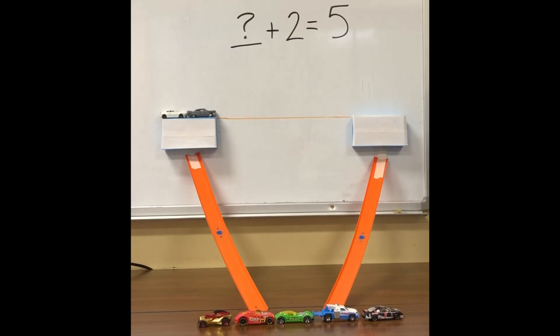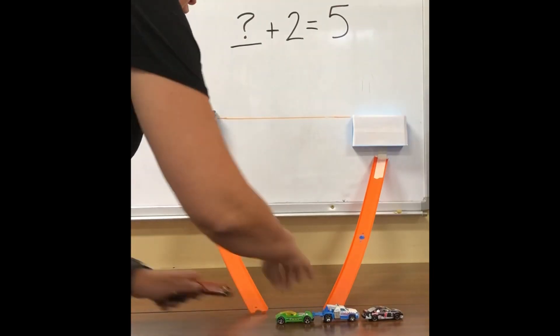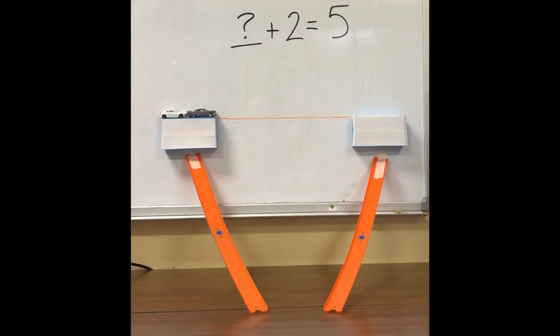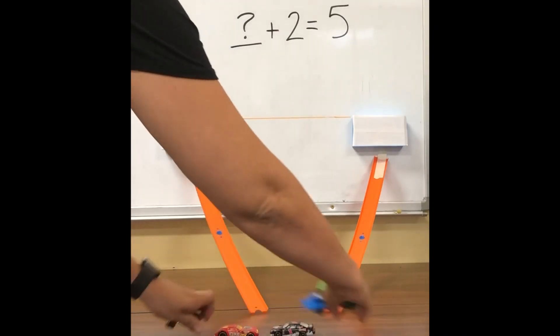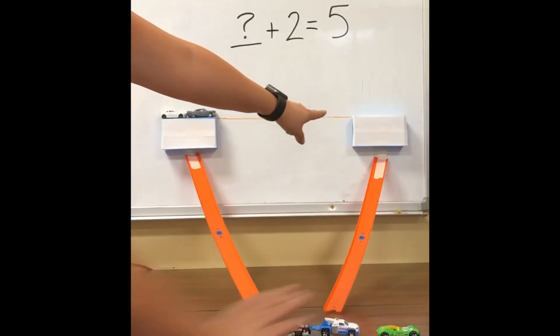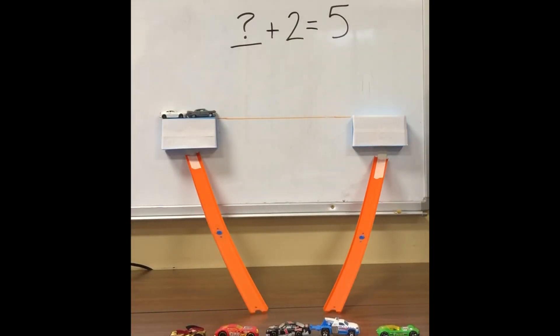How many cars would need to be on the other ramp in order to equal 5 cars at the bottom? 2 plus what is 5?